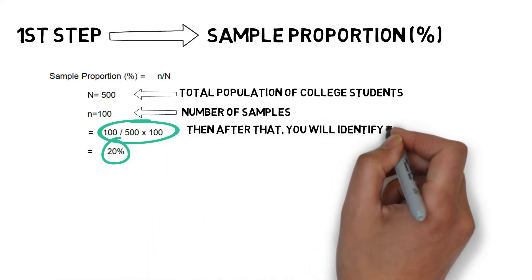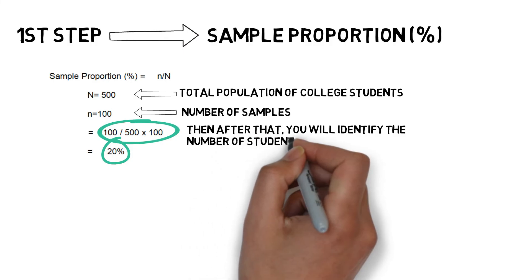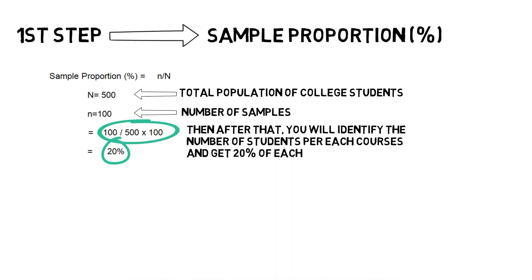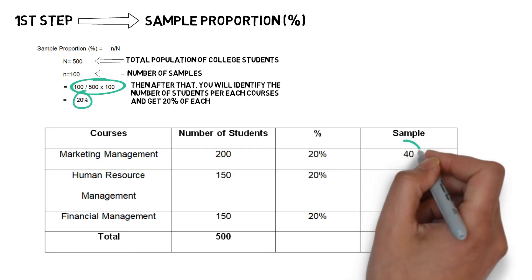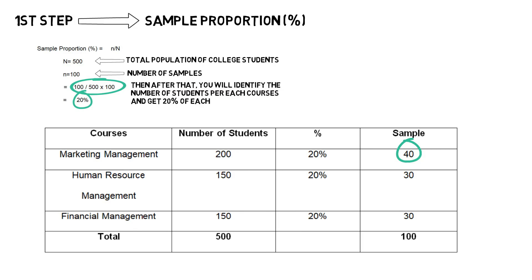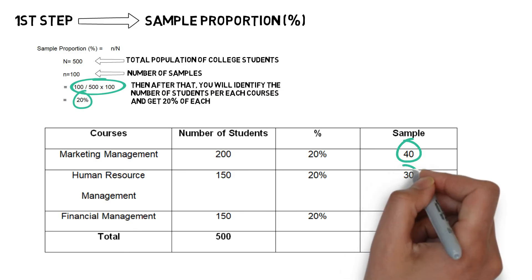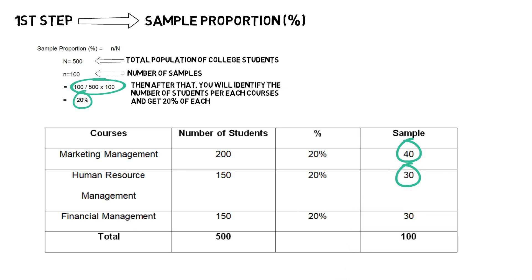After that, you will identify the number of students per each course and get 20% of each. To illustrate, you can see on the picture that you will have 40 respondents in Marketing Management, 30 respondents in Human Resource Management, and 30 respondents in Financial Management.